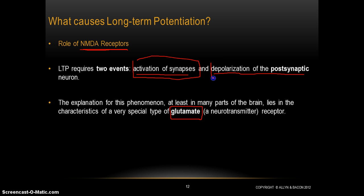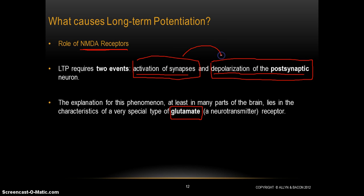Activation of the postsynaptic neuron — those two things together are necessary for long-term potentiation to happen. Remember: neurons that fire together, the presynaptic and the postsynaptic neurons firing together. Neurons that fire together wire together.